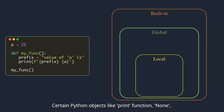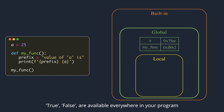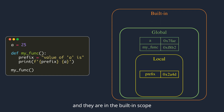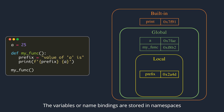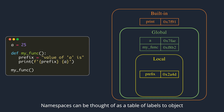Certain Python objects like the print function, None, True, and False are available everywhere in your program, and they are in the built-in scope. Variables or name bindings are stored in namespaces. Every scope has its own namespace. Namespaces can be thought of as a table of labels to object references they are pointing to.